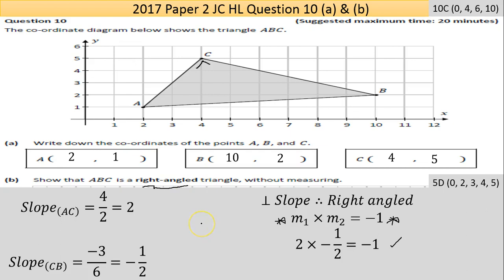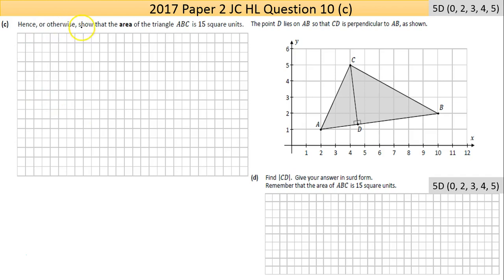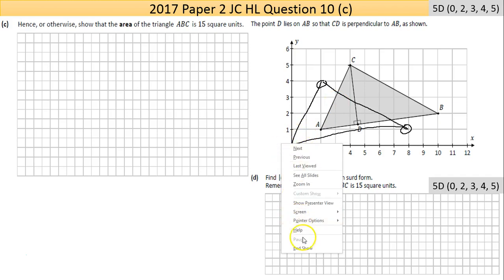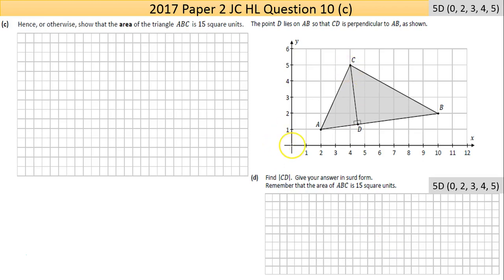Part (c): Hence or otherwise show that the area of triangle ABC is 15 square units. I could translate this to where one vertex is at (0, 0) and use the coordinate geometry area formula from the math tables. That's a bit long-winded, though I'm showing you should know how to do that. It was terribly answered in Leaving Cert - people forgot to translate the points.